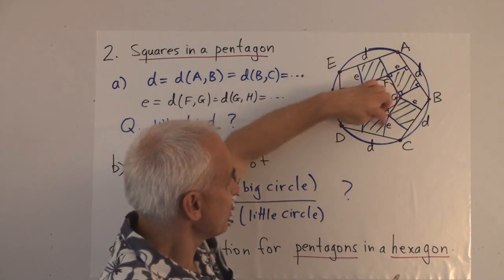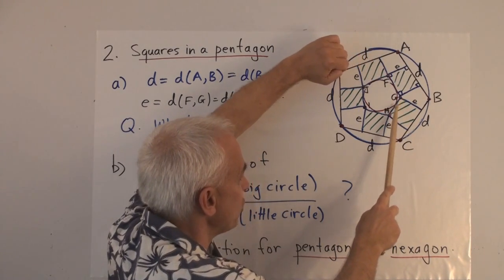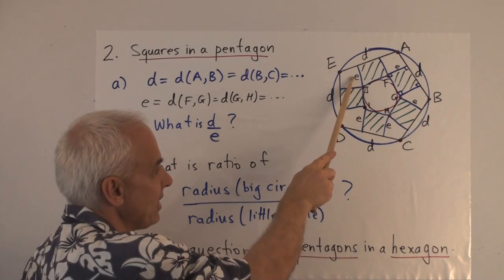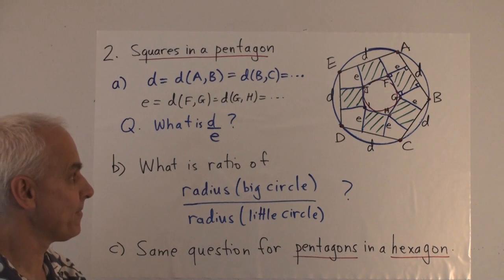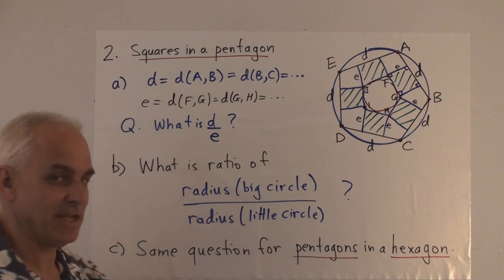So all these squares are congruent, and they meet at these corners, which we call F, G, H, I, and J. And we suppose that the side of the square is of length E.